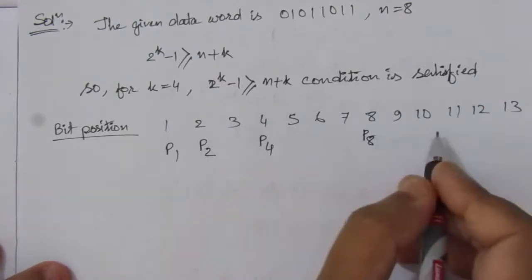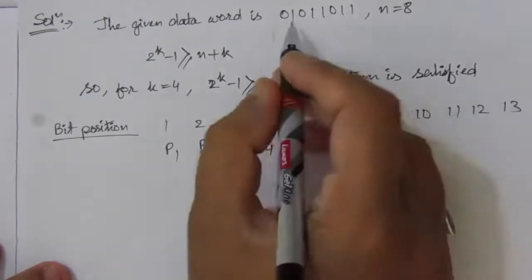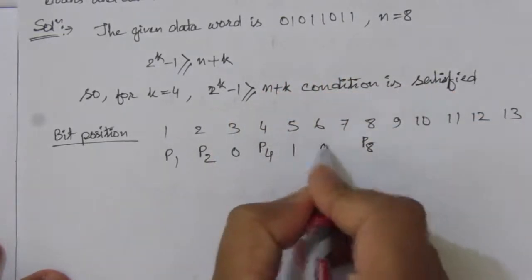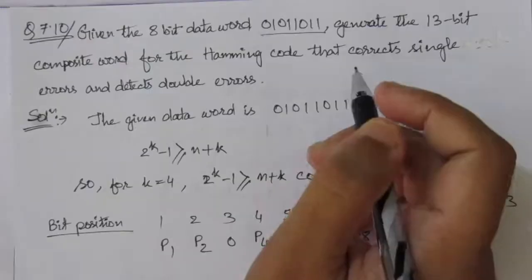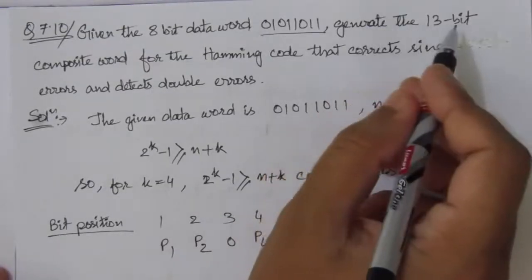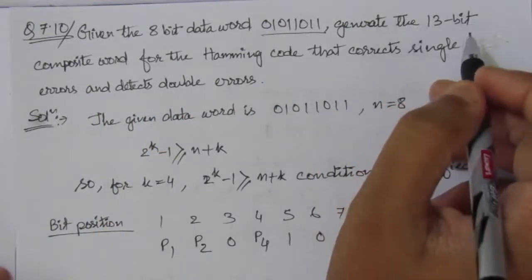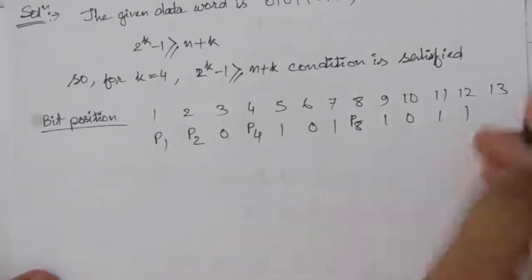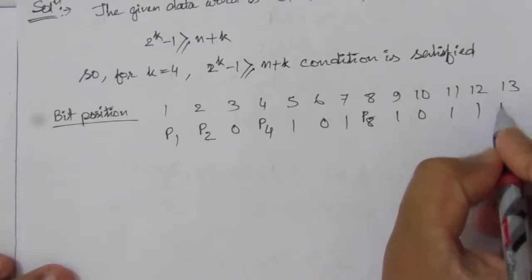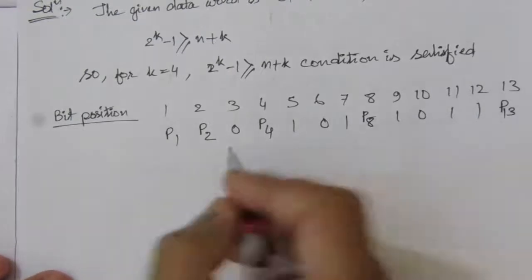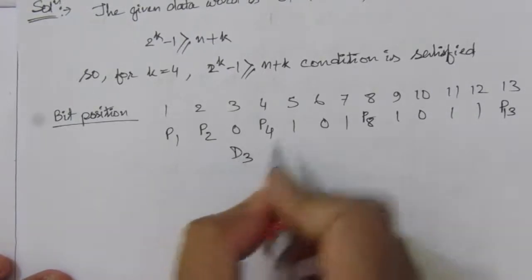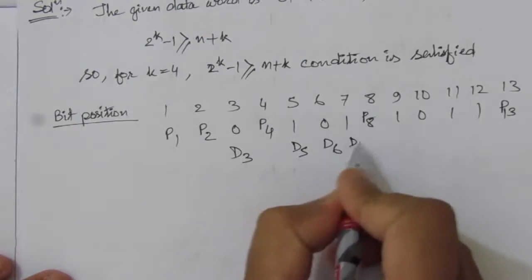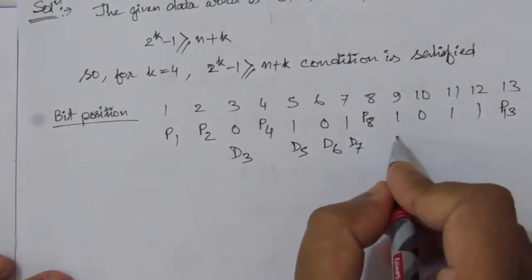In the remaining positions we fill in the 8 data bits: 0 1 0 1 1 0 1 1. So position 3 is d3, position 5 is d5, position 6 is d6, position 7 is d7, position 9 is d9, position 10 is d10, position 11 is d11, and position 12 is d12.